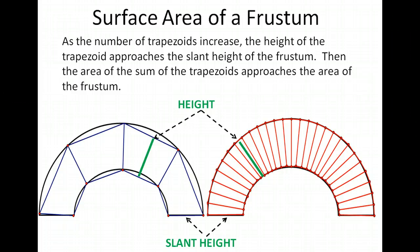Notice that as we increase the number of trapezoids, the height of the trapezoid comes closer to the slant height of the frustum. Remember that the height of a trapezoid is perpendicular to both bases of the trapezoid.